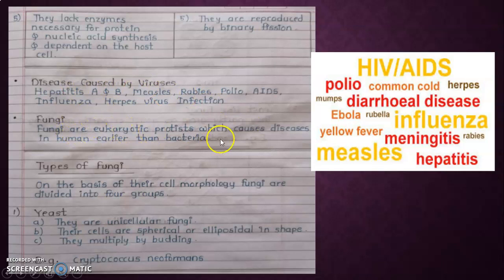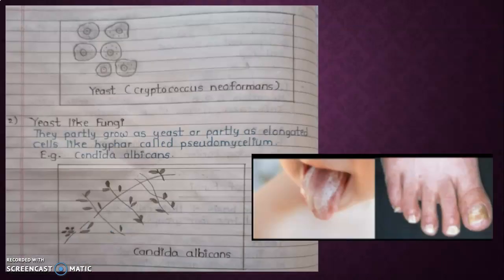Fungi are eukaryotic protists which cause disease in humans. Types of fungi: on the basis of their cell morphology, fungi are divided into four groups. Number one is yeast. They are unicellular fungi. Their cells are spherical or ellipsoidal in shape. They multiply by budding technique. Example: Cryptococcus neoformans. Yeast-like fungi: they partly grow as yeast or partly as elongated cells like hyphae called pseudomycelium. Example: Candida albicans.